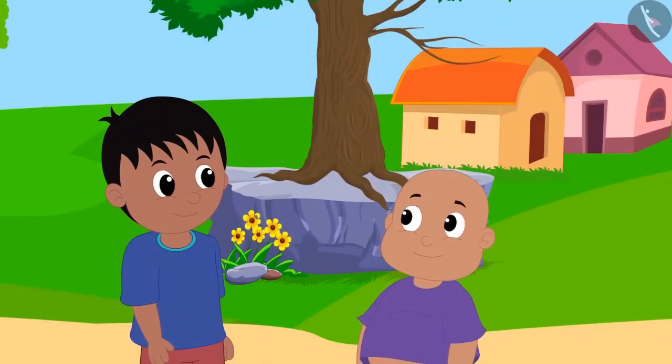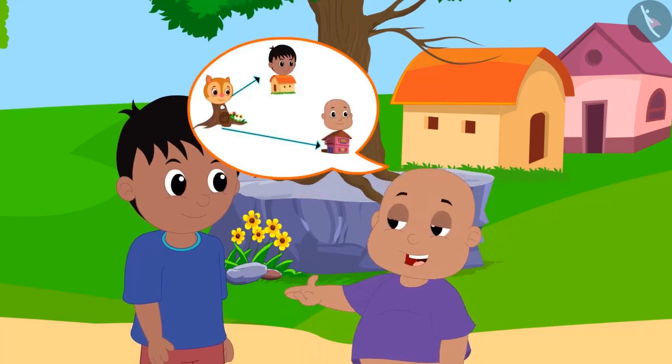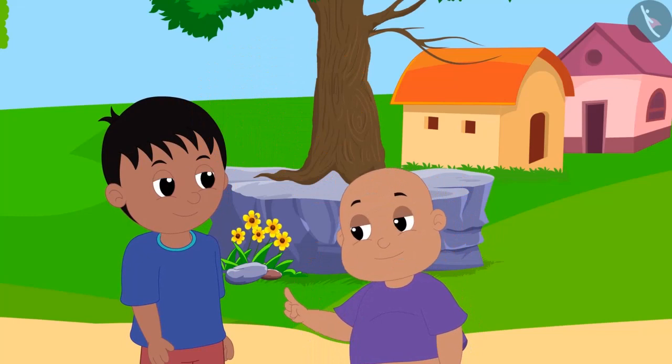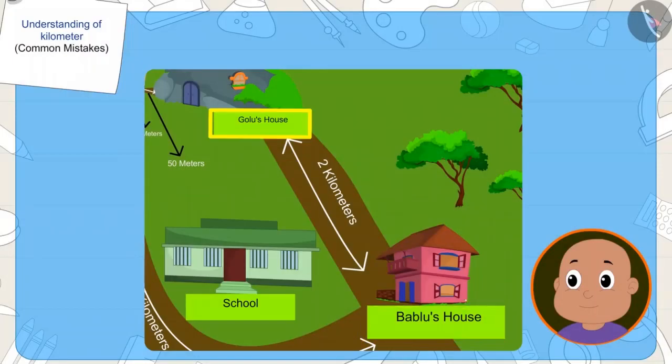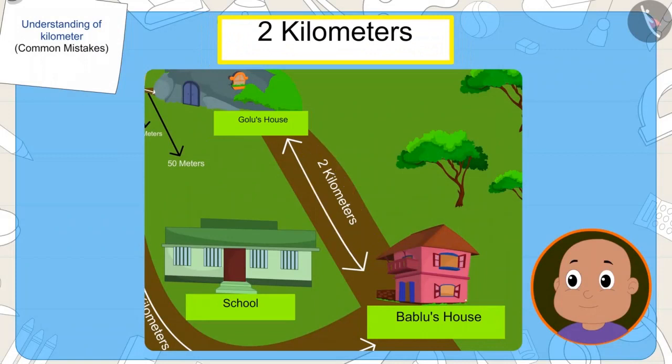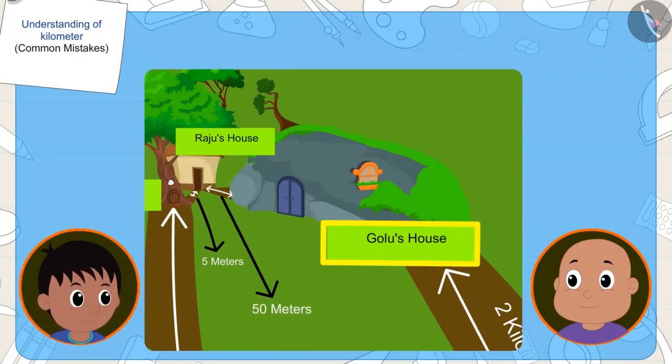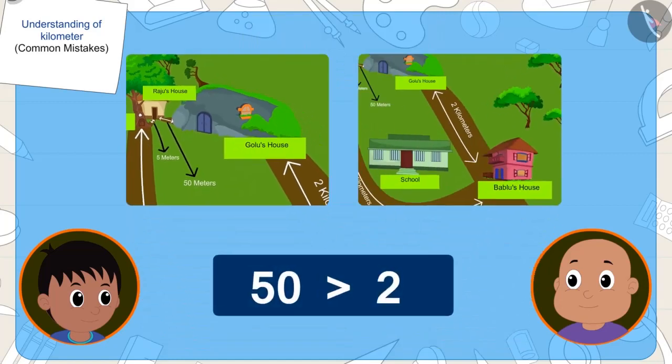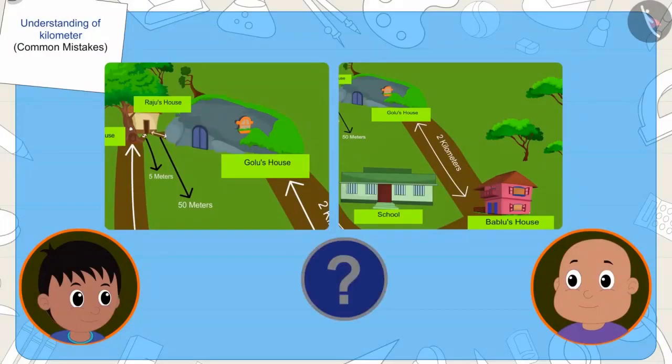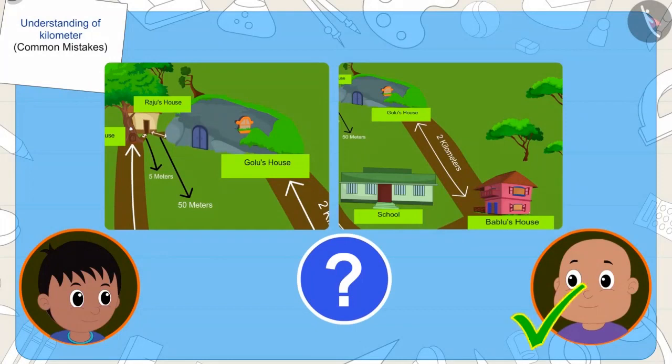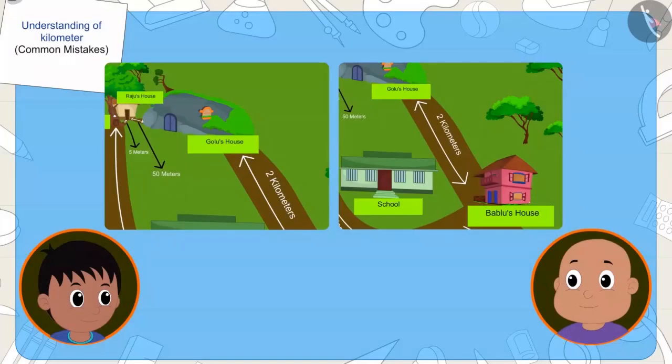Now Babalu told Raju, even though his house is farther from Chanda's house, but it is definitely closer to Golu's house. His house is two kilometers away from Golu's house and Raju's house is 50 meters away from Golu's house. And two is less than 50, therefore, his house is closer to Golu's house. Kids, what do you think? Is Babalu's point correct this time? Yes! Babalu is wrong again.